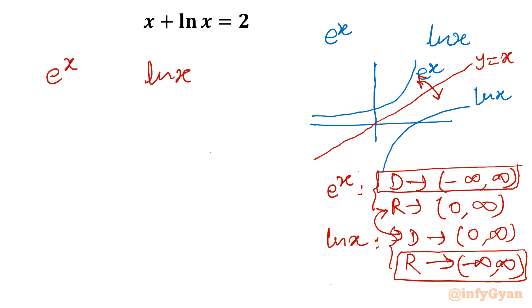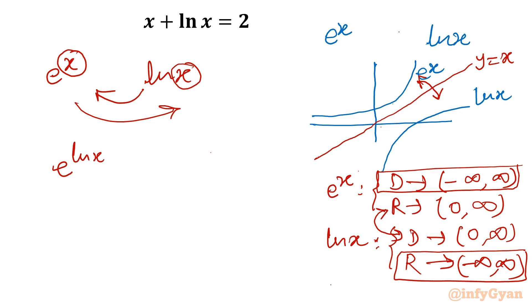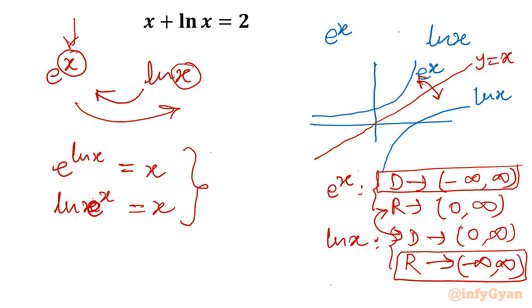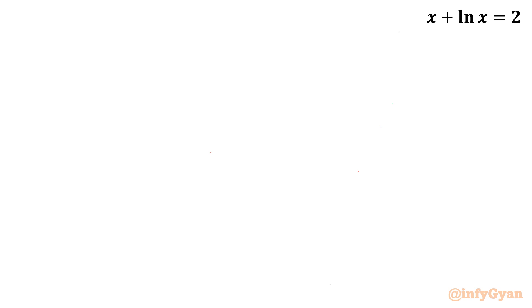Using the property of inverse functions, I will replace x with ln x in the first function and x with e^x in the second. See what happens: e raised to the power ln x gives x — I have replaced x with the inverse function. Similarly, ln of e^x also gives x. So the conclusion is: if you substitute the inverse function, you get x back. By this property we can better understand the Lambert W function.